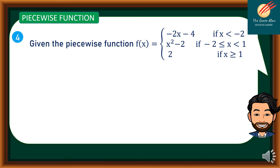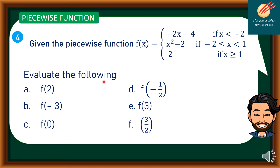Now let's move on to evaluation of piecewise functions. Consider: f(x) = -2x - 4 if x < -2; f(x) = x² - 2 if -2 ≤ x < 1; f(x) = 2 if x ≥ 1. We will evaluate: f(2), f(-3), f(0), f(-1/2), f(3), and f(3/2).